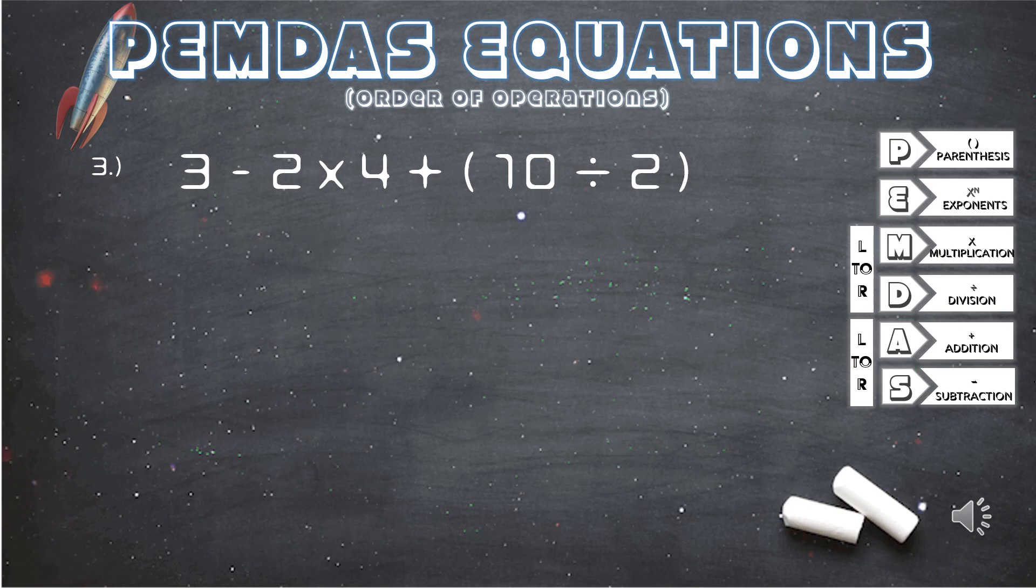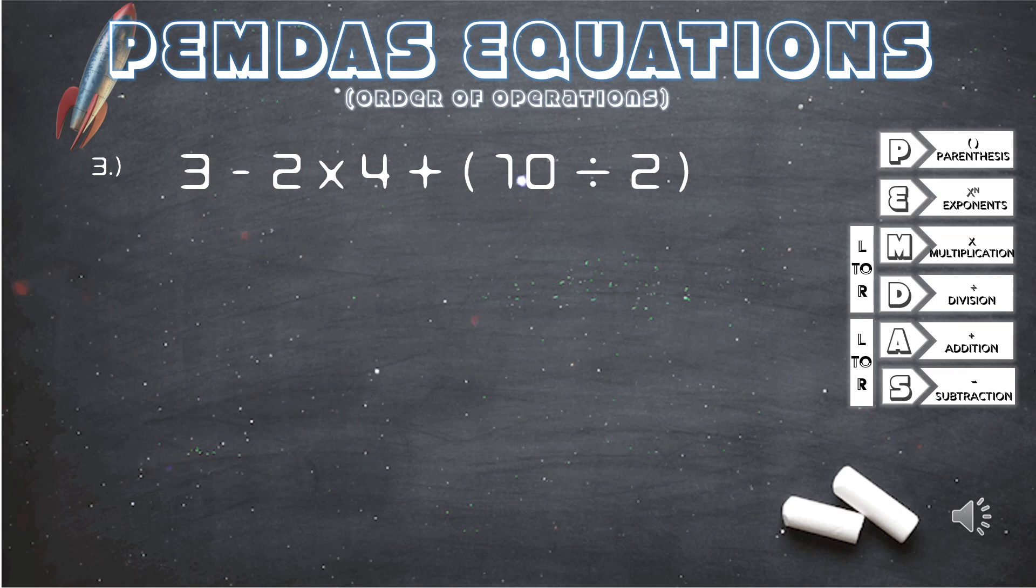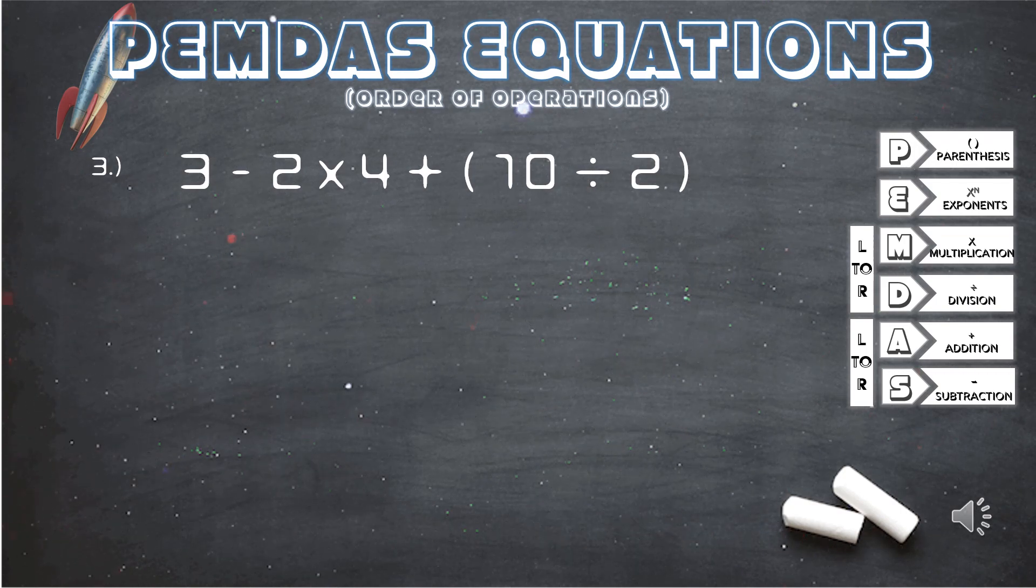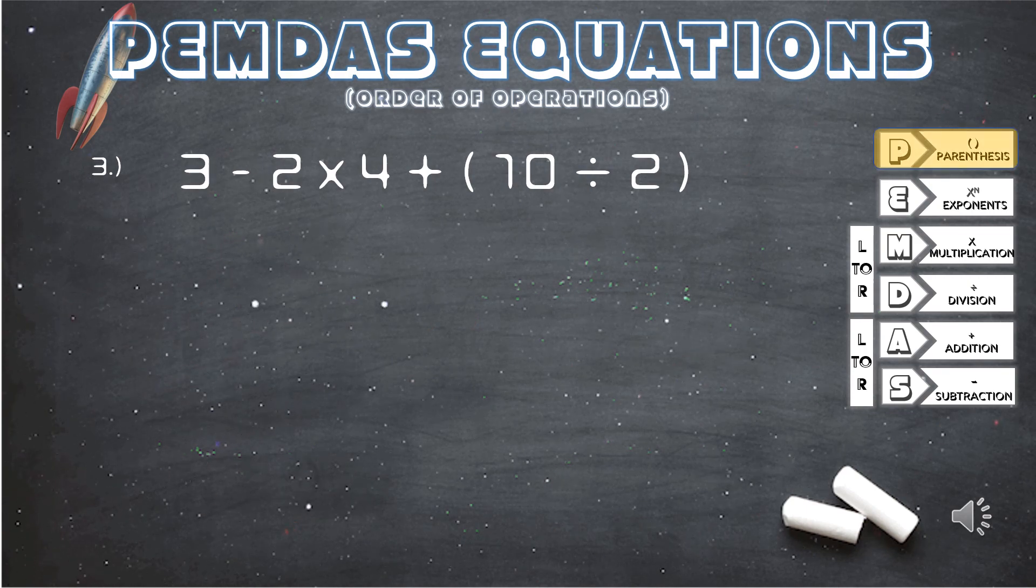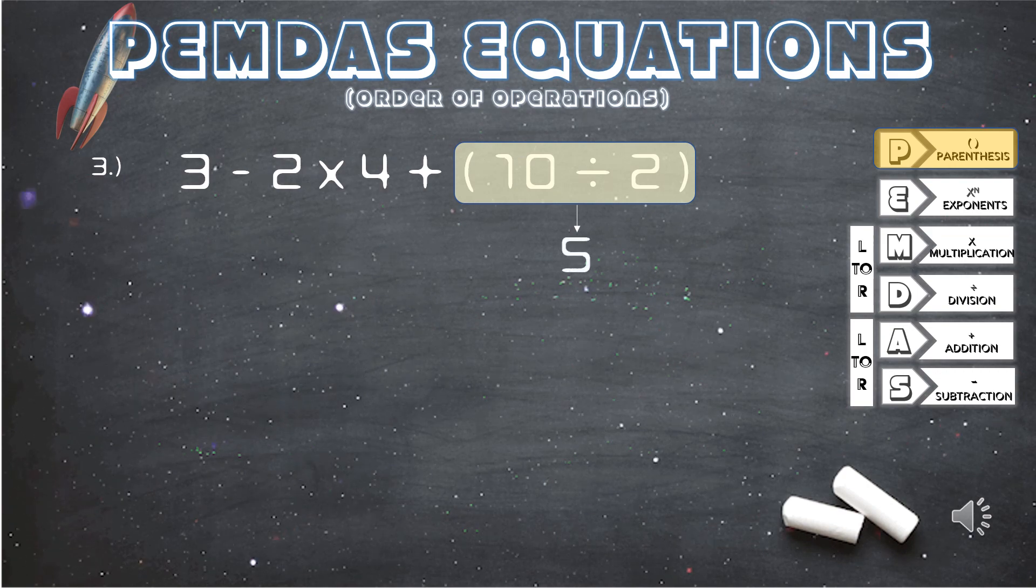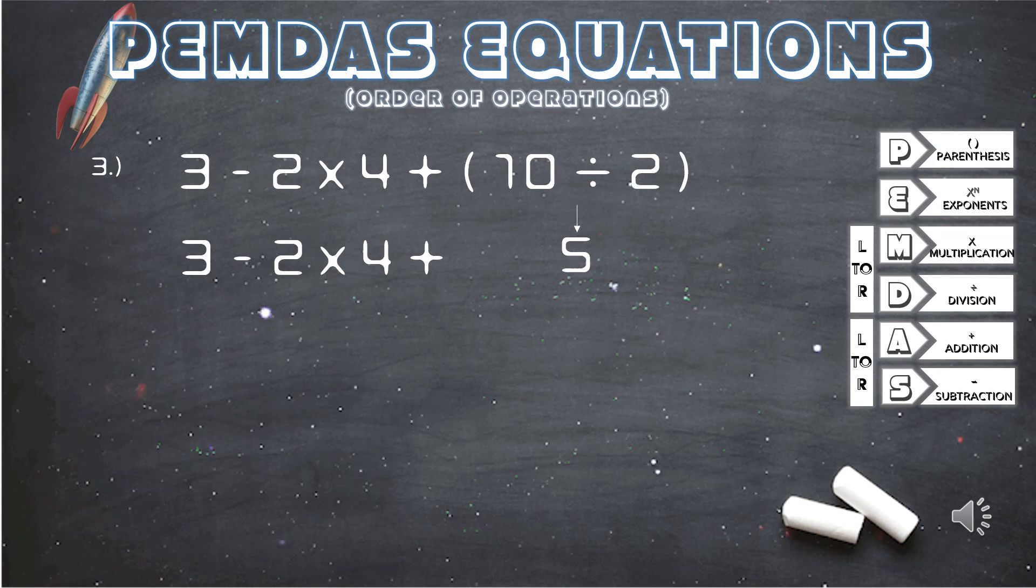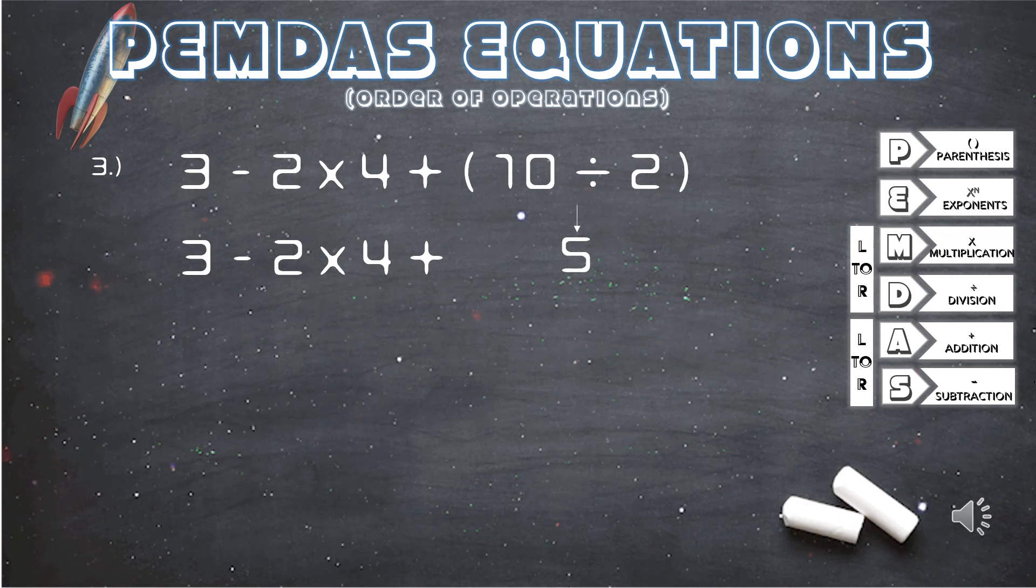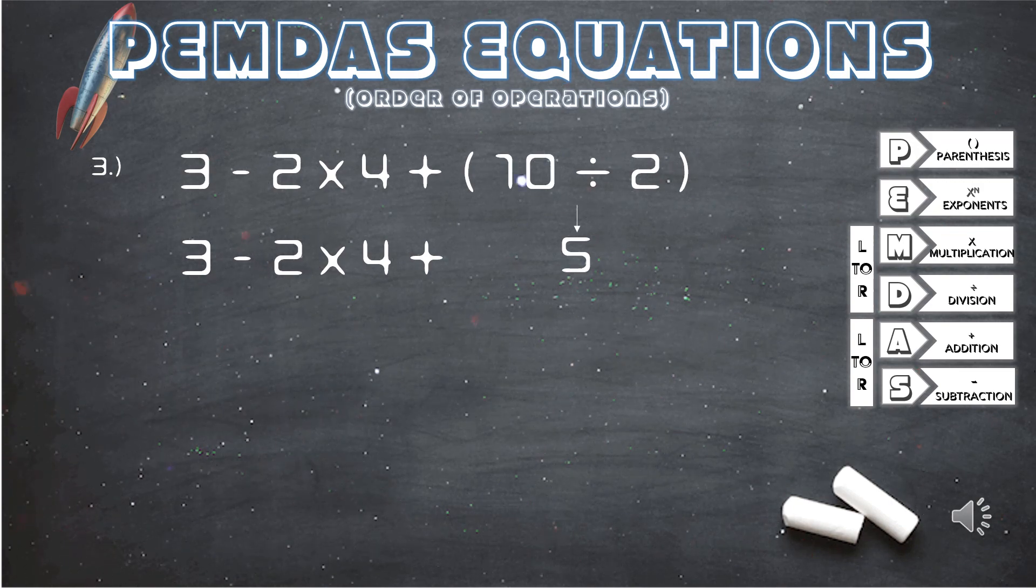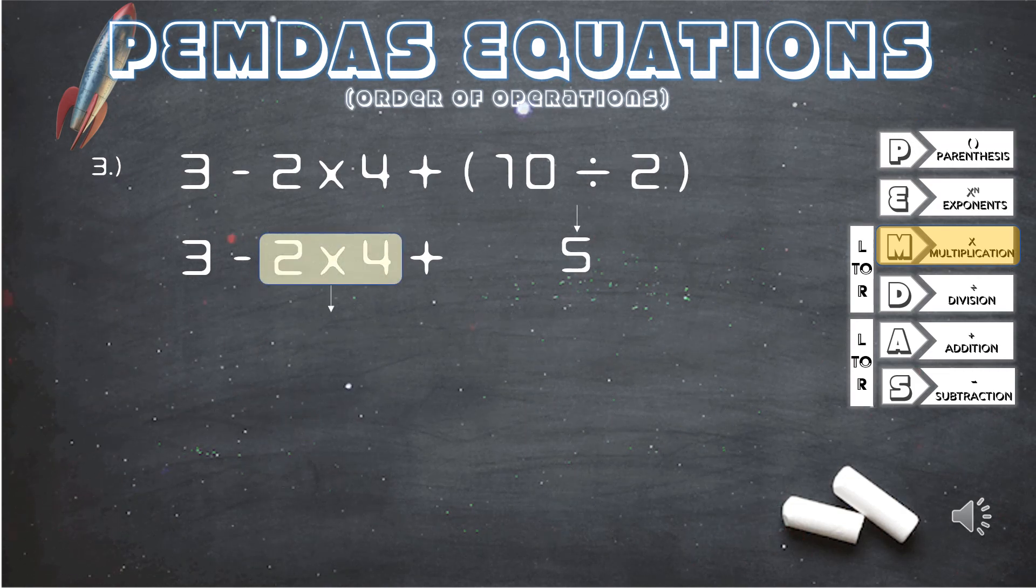3 minus 2 times 4 plus parentheses 10 divided by 2 parentheses. Solving what is in the parentheses is our first step, 10 divided by 2, that gives us 5. We bring down the rest of the equation, check the PEMDAS guide to see what we will solve next: subtraction, multiplication, or addition. According to the PEMDAS guide, it will be multiplication. 2 times 4 equals 8.